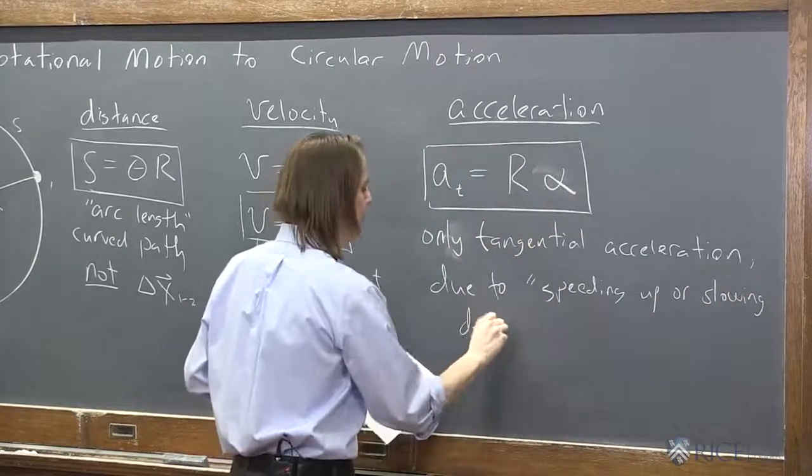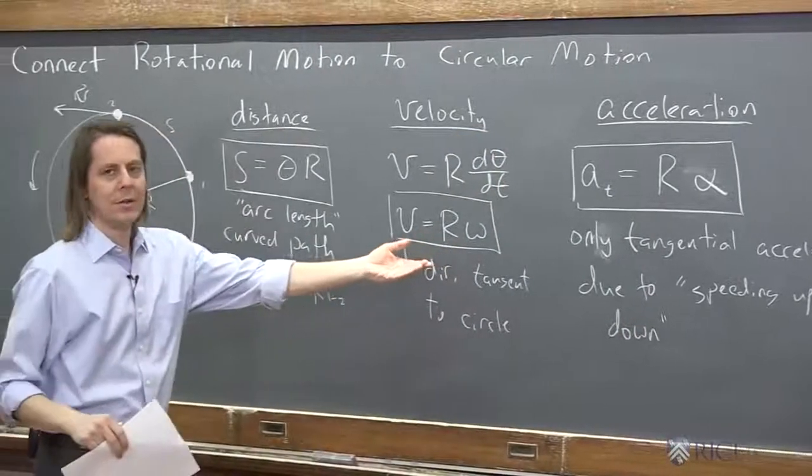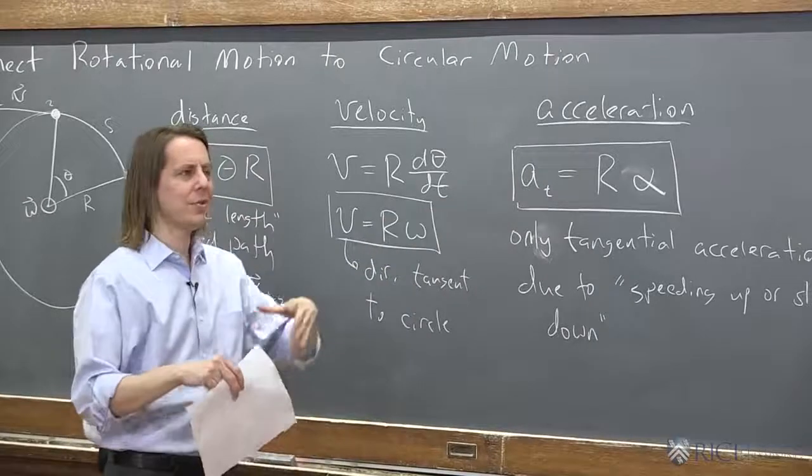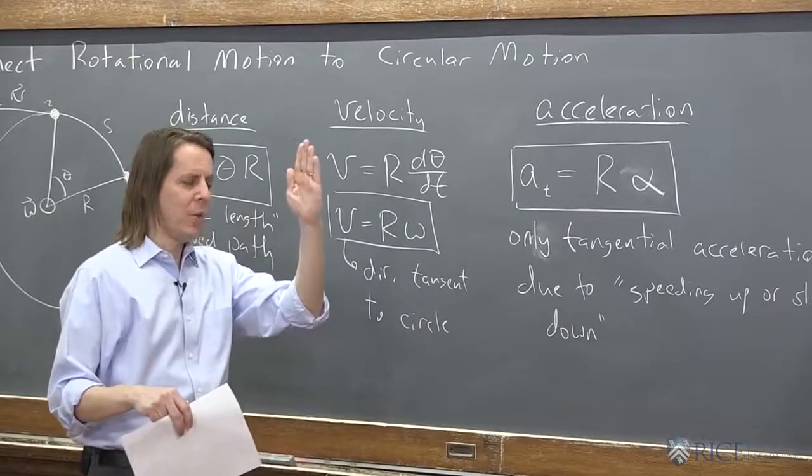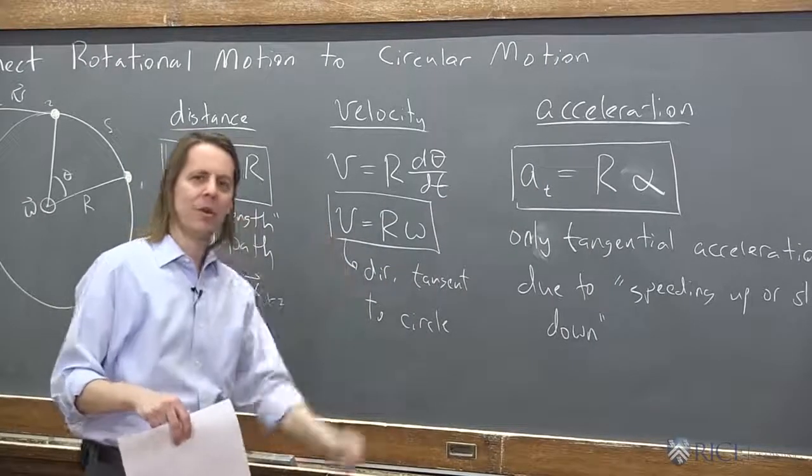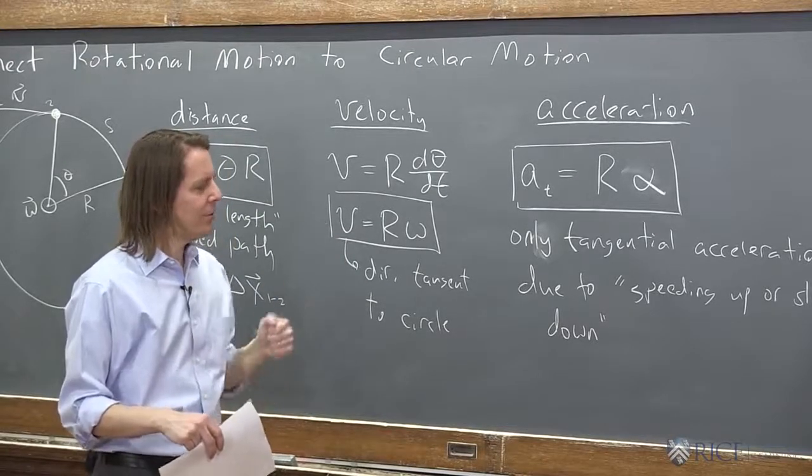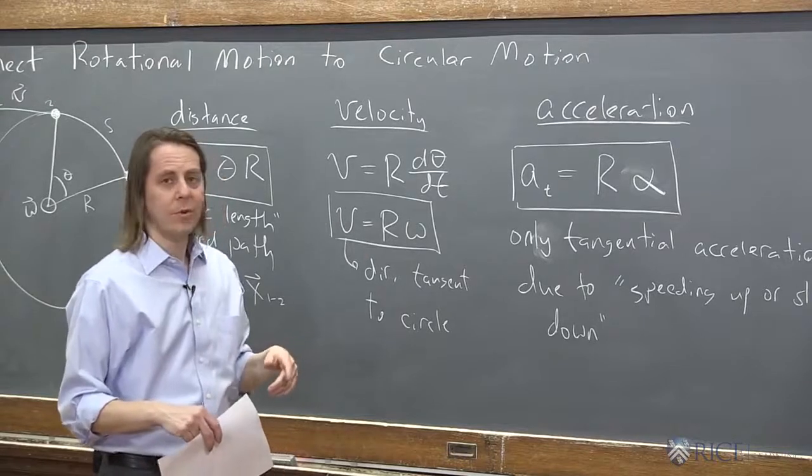The tangential acceleration, you can think of as the component due to speeding up or slowing down. So if you have your wheel spinning at a constant omega, then this is zero. There is no tangential acceleration. If you have a case where the wheel is speeding up because you maybe have a weight pulling on it and creating a torque and speeding it up, or if you're slowing it down like we did in the other demo when we stopped the wheel, then you'll have a tangential acceleration.